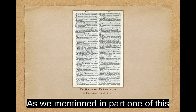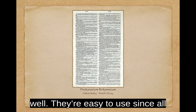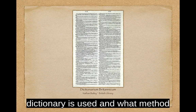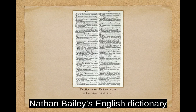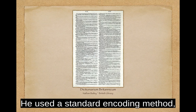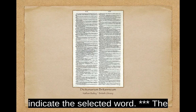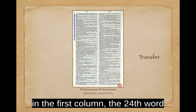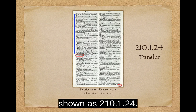As mentioned in Part 1 of this episode, the American diplomats were using dictionary codes as well. They're easy to use since all the words are in alphabetical order. The questions become which dictionary is used and what method is used to identify the word. Nathan Bailey's English dictionary was quite popular at the time and became Arnold's source. He used a standard encoding method — page, column, word count — to indicate the selected word. For example, the word 'transfer' was on page 210, first column, the 24th word down, shown as 210-1-24.